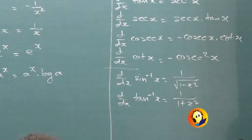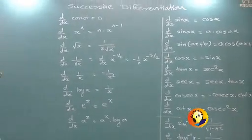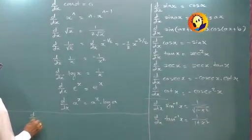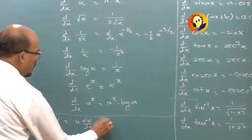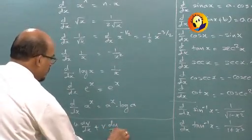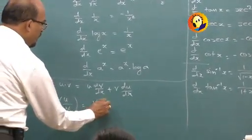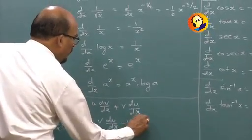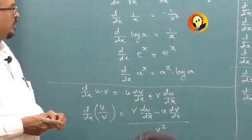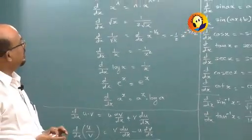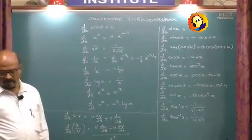This will be the minimum set that we will require. If you know it, fine. Otherwise, make a note. And d by dx of u upon v will be v du by dx minus u dv by dx, whole thing upon v square. These are the minimum formulae we will require to start with the next topic called successive differentiation. Make a note and then we will start with the topic.